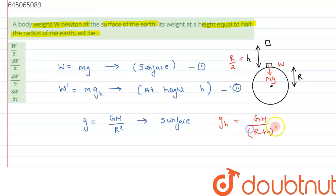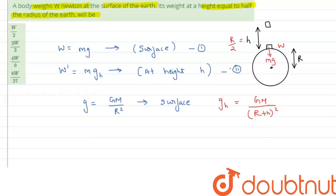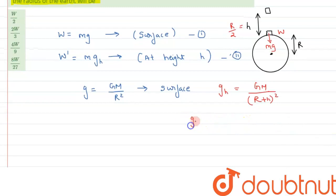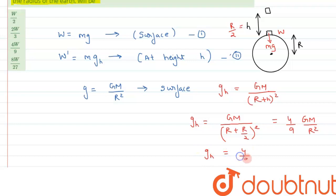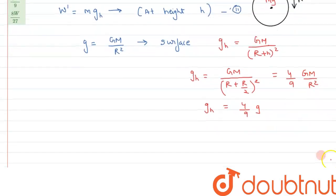From this we can write g_h = GM/(R + h)². Since h = R/2, substituting gives GM/(R + R/2)², which simplifies to GM/(3R/2)². Solving, g_h = (4/9) × GM/R², and since GM/R² = g, we get g_h = (4/9)g.